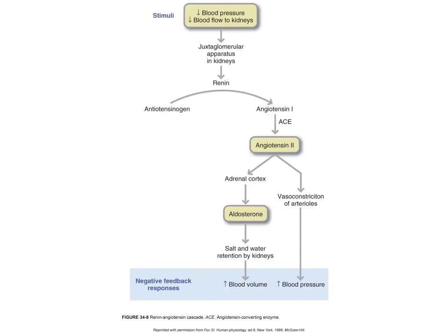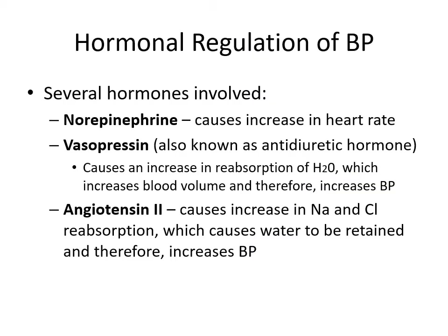Here you can see that system — due to a genetic change, excessive amounts of these hormones would cause an increase in blood pressure. Looking at hormonal regulation: norepinephrine increases heart rate; vasopressin, aka anti-diuretic hormone, causes an increase in reabsorption of water, which increases blood volume, leading to increased blood pressure. Angiotensin 2 causes an increase in sodium and chloride reabsorption, which causes water to be retained, also leading to an increase in blood pressure.